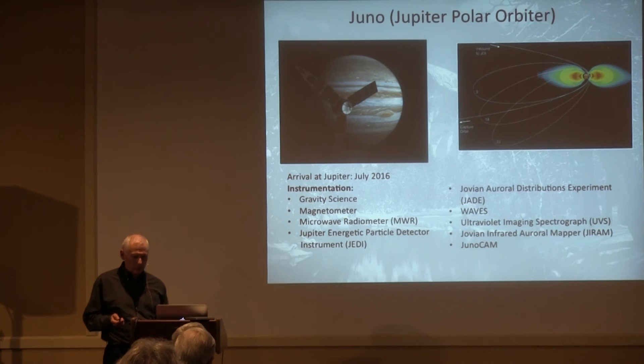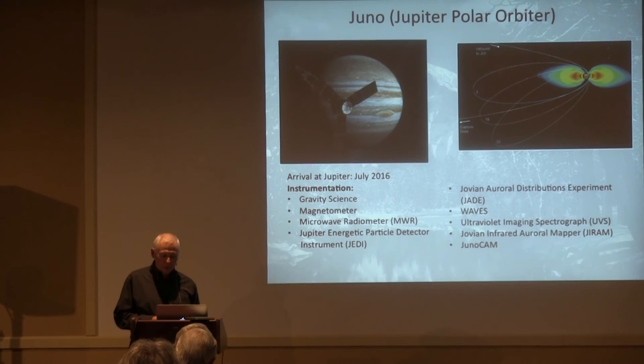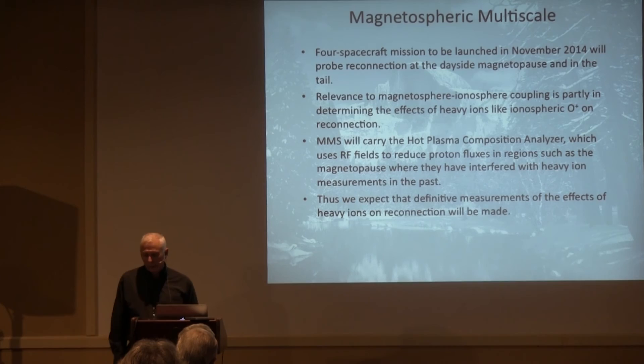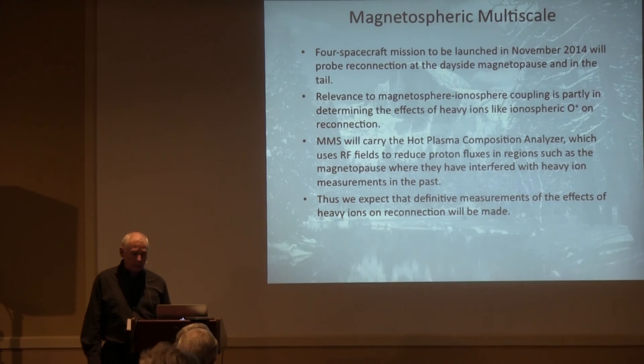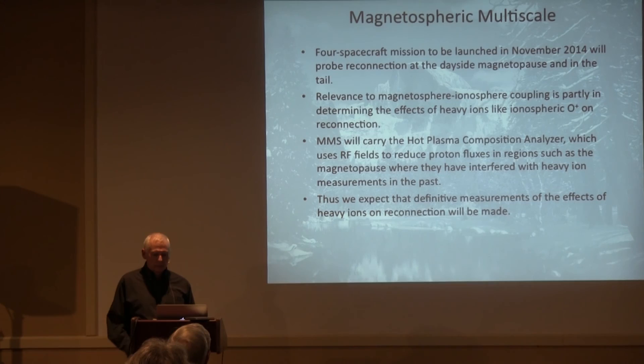In terms of future missions: Juno will arrive at Jupiter in 2016. Several people here are working on it — polar orbit going in over the aurora, imaging the aurora, measuring all the different plasma and field quantities we're used to. It's got to stay out of the radiation though; we'll have one year, 33 orbits, highly elliptical. That will advance our knowledge of magnetosphere-ionosphere coupling at Jupiter. MMS — I've been working on it for a while now. It's mainly a magnetosphere mission, but the effect of heavy ions like ionospheric oxygen on the reconnection rate is a hot topic. We've designed a special instrument just focused on that.